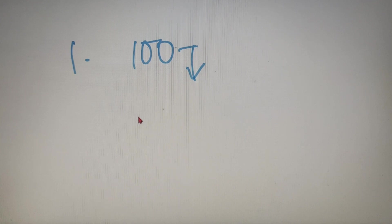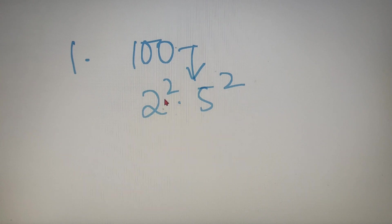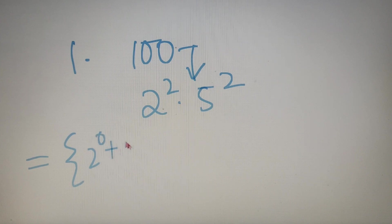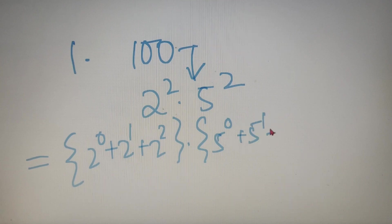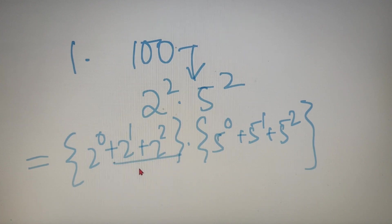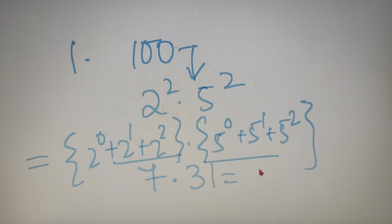For our first example, we have to calculate the sum of factors of the number 100. The first step is prime factorizing the number, which gives 2² × 5². Now to calculate the sum of factors, we put this into the formula: (2⁰ + 2¹ + 2²) × (5⁰ + 5¹ + 5²). The sum of the first part is equal to 7 and the sum of the second part is equal to 31, and the product of these two numbers is equal to 217. So the sum of factors of 100 is equal to 217.